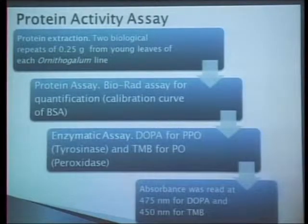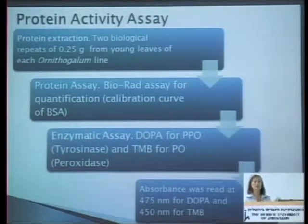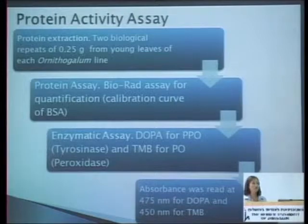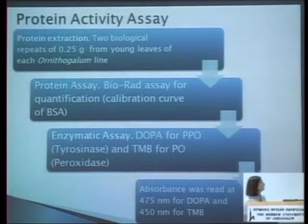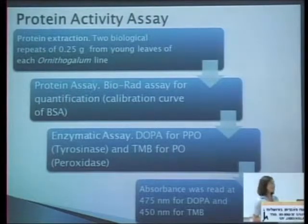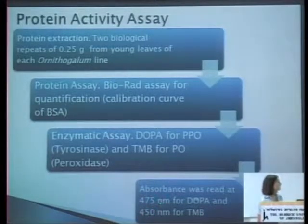We did some biochemical assays to measure indirect resistance to the bacteria, because it has been seen in other studies, especially in potato, that the level of phenols and the activity of some enzymes like tyrosinase and peroxidase are related to resistance to Pectobacterium carotovorum and even correlate with each other. For the protein activity assay, we performed protein extraction using two biological repeats from young leaves of each Ornithogalum line, quantified using a Bio-Rad assay. The enzymatic assay used DOPA to measure tyrosinase activity and TMB for peroxidase activity, and we read the absorbance at different wavelengths for each buffer.